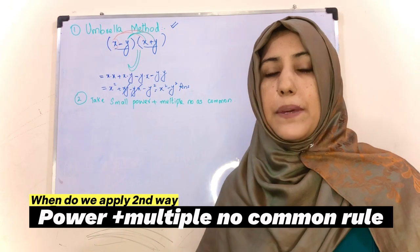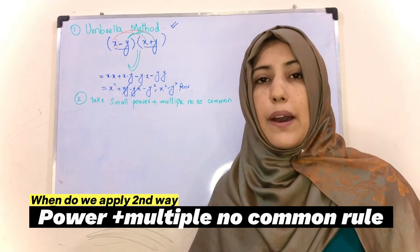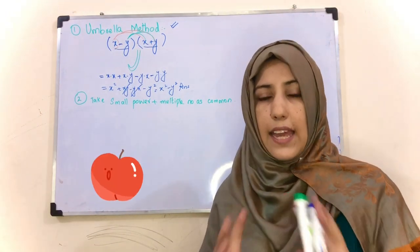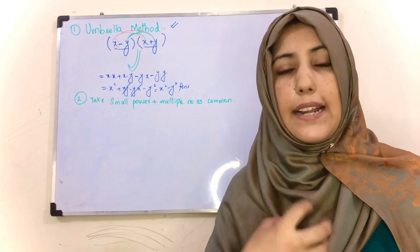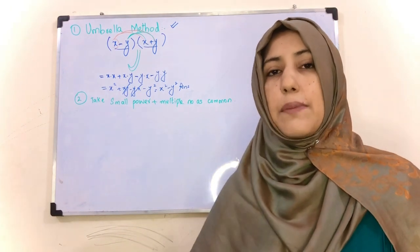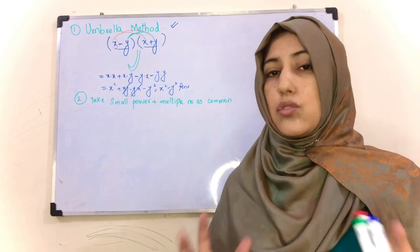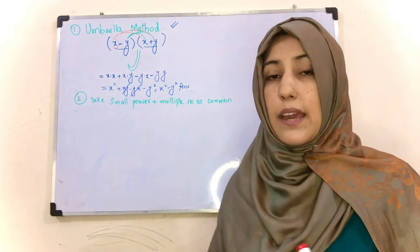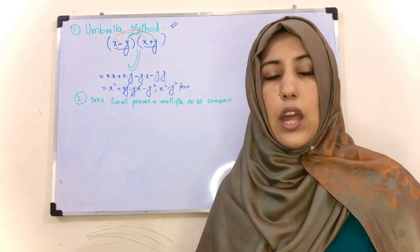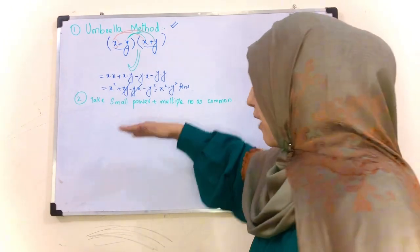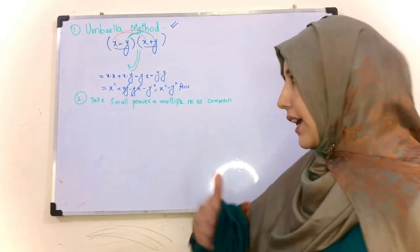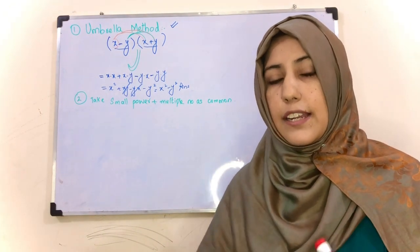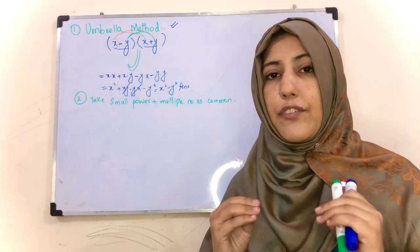Second method apply kab kiya jata hai - jab hamare paas kuch complicated term ho. Jaise ke dekhen ek saib (apple) hai - saib ko jab bhi aapne bite leni hoti hai to pehle aap usko chhote chhote pieces mein divide karte hain. Isi tarah hamare paas second method hai - hum kab apply karenge jab hamare paas ek bahut complicated cheez hogi, to pehle hum uski power ko chhote small pieces mein split karenge, aur phir multiples ko small pieces mein split karke cutting karenge, and then simplification ho jaegi.